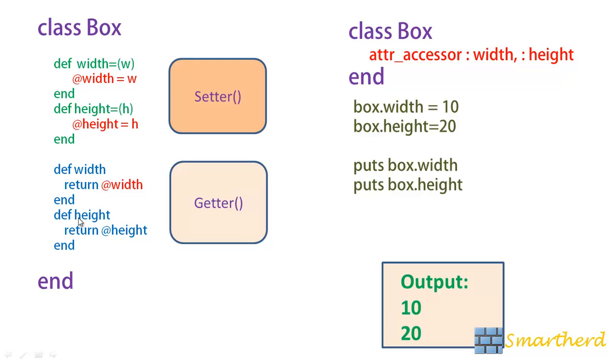Similarly this height is creating instance variable height and setter of name height and here in getter also you can see this is width and this is height which is similar to the instance variable that is why I have given this example.